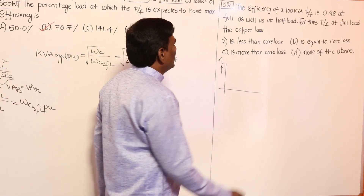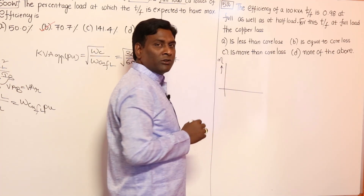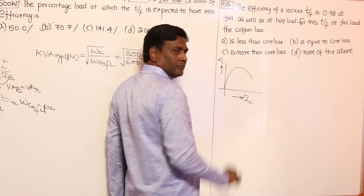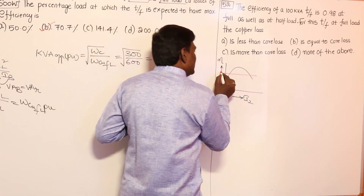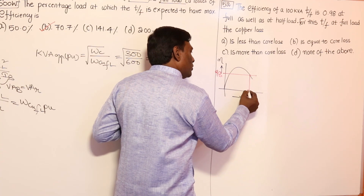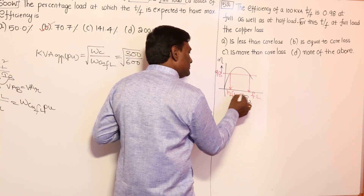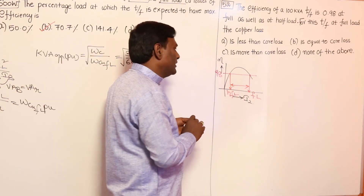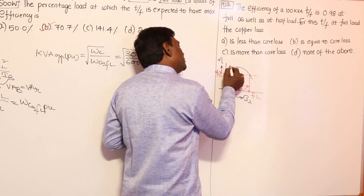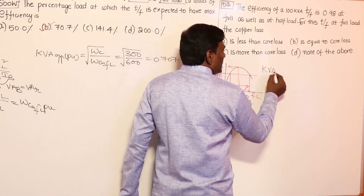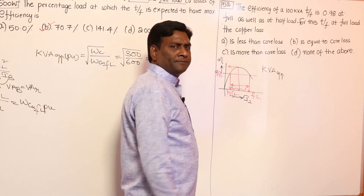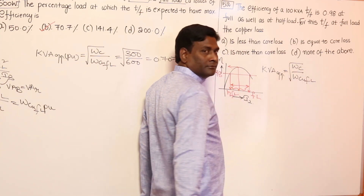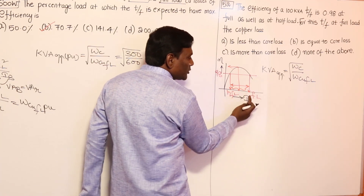Since power factor is not mentioned, it should be considered constant. The efficiency is 98 percent at full load and also at half full load. Maximum efficiency should occur between half full load and full load. The KVA at maximum efficiency in per unit equals the square root of core loss divided by full load copper loss.